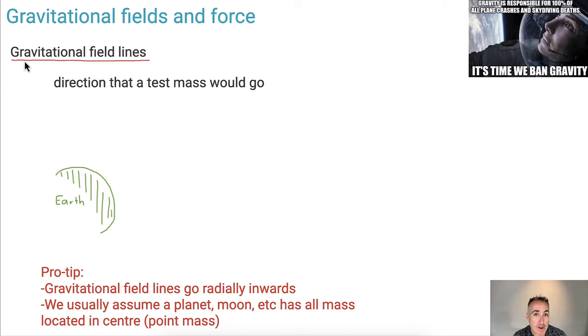What are gravitational field lines? We need to know a definition. First of all, if we're going to define this, it really is just the direction that a test mass would go. So what do I mean by a test mass? That means imagine that in my hand I have a little mass. Imagine you place it wherever you want, which direction does it go? You draw an arrow in that direction, and you're set.